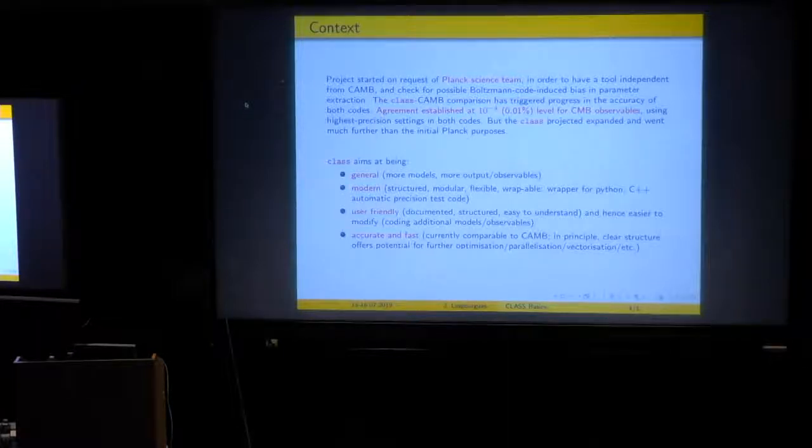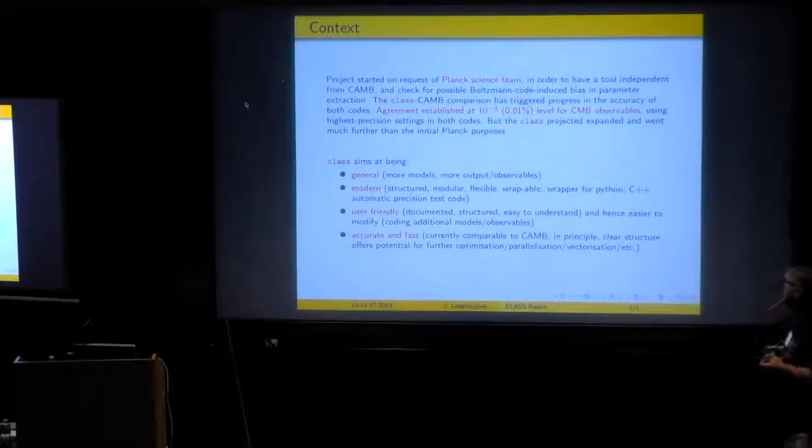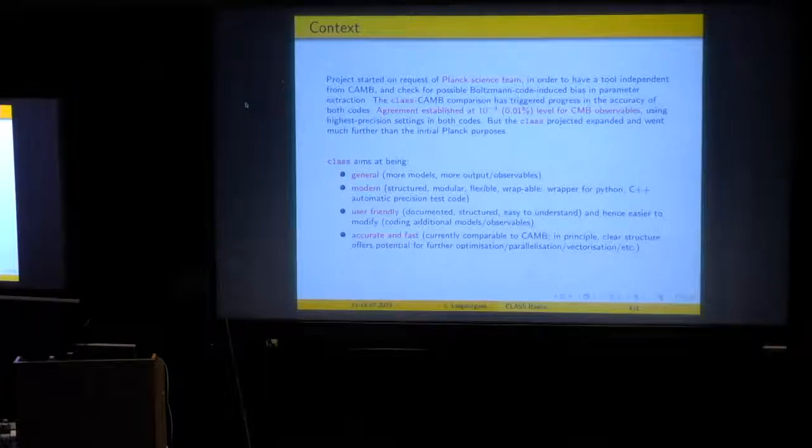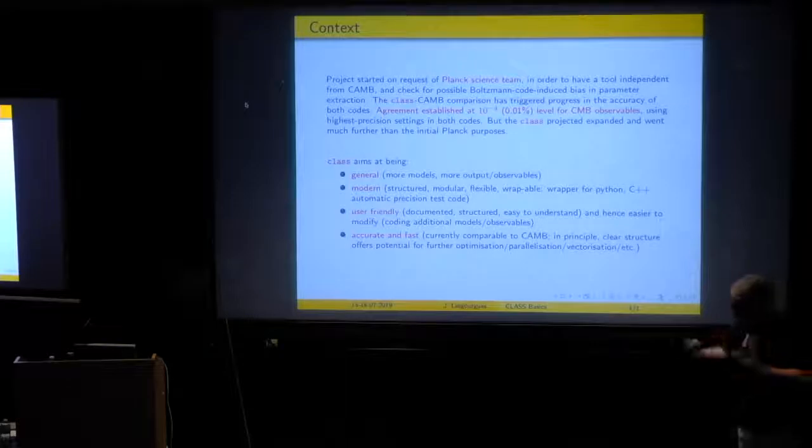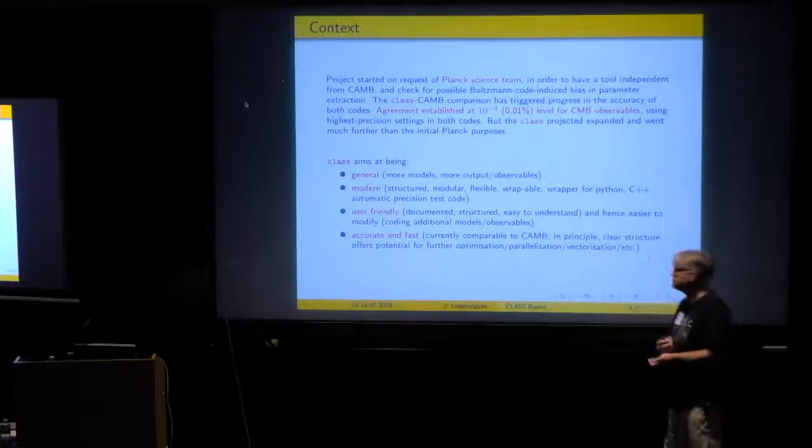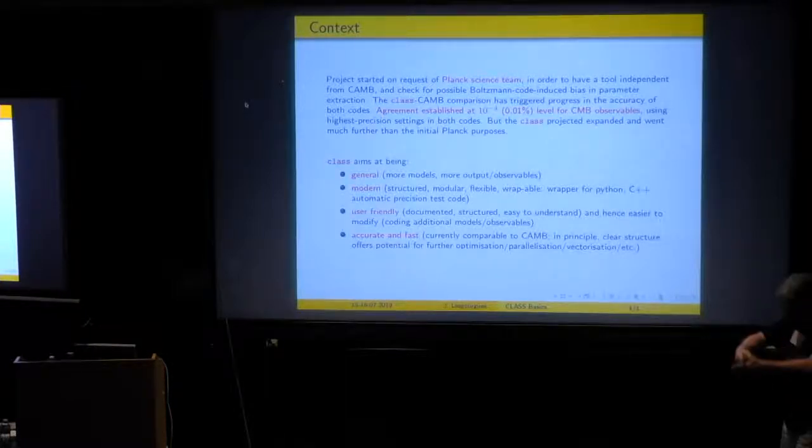So this was really the main motivation, but then the CLASS project went beyond this, because some people, including myself, were excited to develop a new feature and do real research with it. So these are the goals of CLASS. It looks like a commercial so far. In fact, I just tell you what we tried to achieve. And then it's, of course, the user who decides if it's achieved successfully or not. So the goal of CLASS was to be as general as possible with a lot of cosmologies implemented, lots of species, adding a lot of new physics, but not at the expense of performance. We want it to be modern, which means a clearly structured code, very modular with independent modules, independent tasks, no overlap between them, flexible and wrappable.